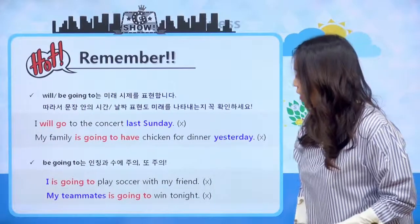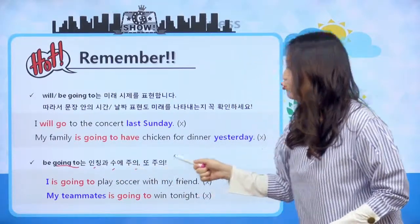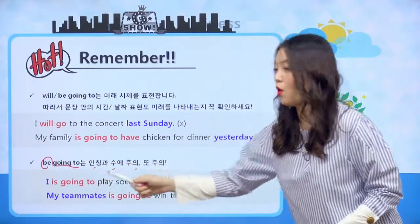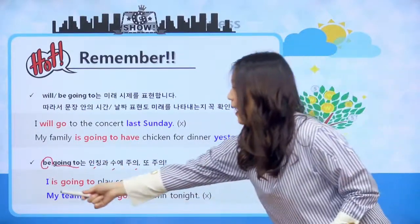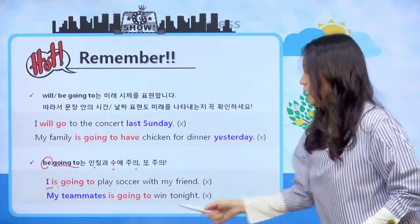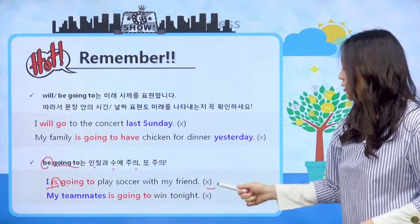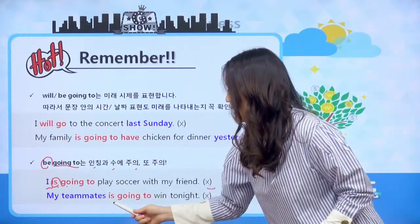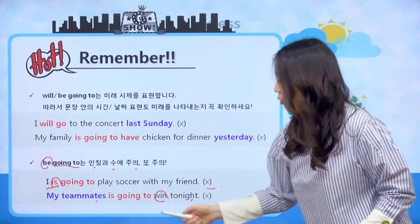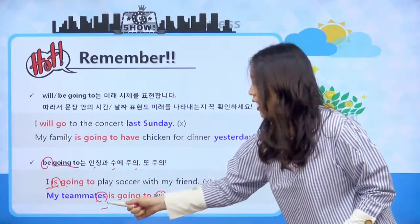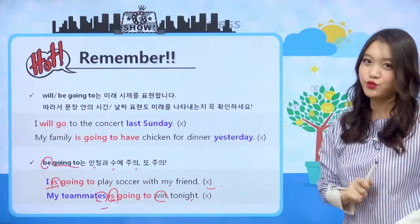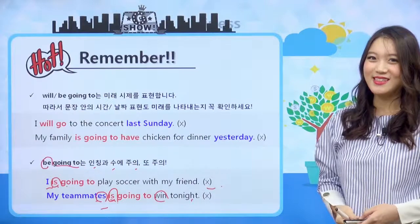또 다른 포인트는 be going to는 인칭과 수의 주의가 필요해요. be going to는 will과 다르게 이 be 동사가 인칭이나 수에 따라서 변한다고 했어요. 그래서 I이면 'is going to'가 아니고 am이 와야 되는 거죠. 'I am going to play soccer with my friend' 해야지 여기에 is가 오게 되면 틀린 표현이라는 거. 'My teammates is going to win tonight' 하면 여러 명이죠? 복수니까 is 대신에 are가 와야겠죠? 그래서 be going to는 here에 오는 be 동사의 변화에 꼭 주의를 해주셔야 돼요.